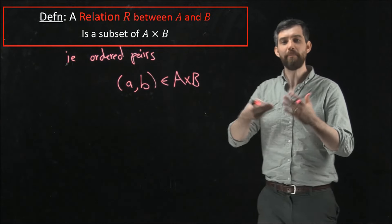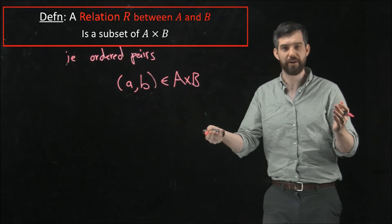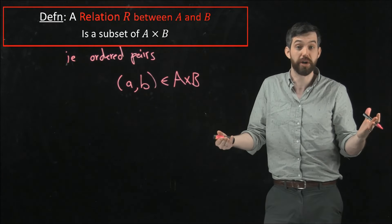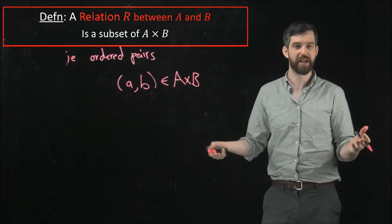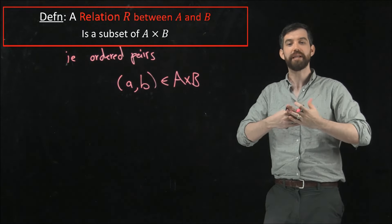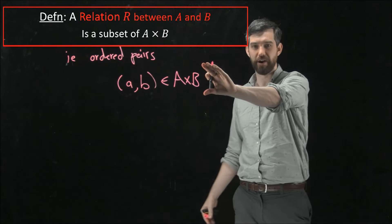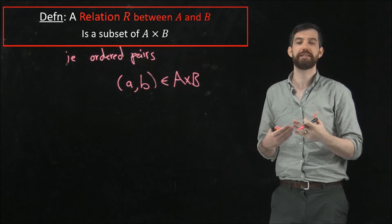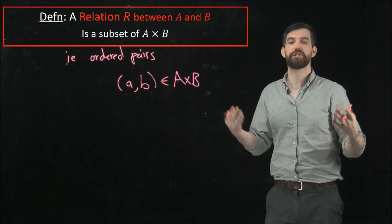And in our humans and pets examples, we had some pairings of humans and pets were in there, and some were not. So it is not all possible pairings, at least it's usually not all possible pairings, that could be a kind of trivial relationship, I suppose. But it is some subset, some collection of ordered pairs that is within this Cartesian product, but is not necessarily going to be the entirety, and so it is a subset.